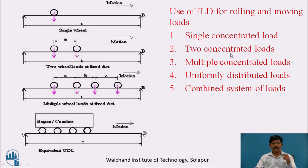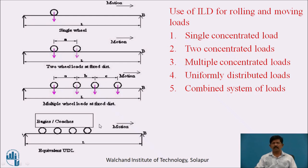The ILD can be used for a single concentrated load, two concentrated loads such as a wheel load with a fixed distance between them, multiple concentrated loads such as a truck with more than six wheels, a uniformly distributed load, or a combination of these.